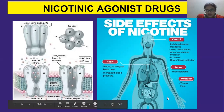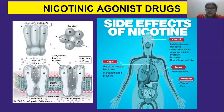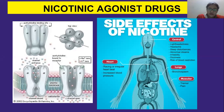We are talking about central effects because nicotine can enter into the central nervous system — it is lipid soluble in nature. It produces lightheadedness, headache, sleep disturbances, abnormal dreams, irritability, dizziness, and risk of blood restriction. In the lungs it produces bronchospasm; in muscles, tremor and pain; and in the heart, irregular heartbeat and increased blood pressure.